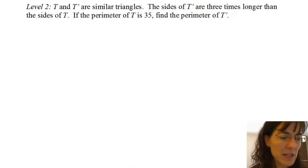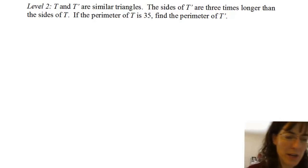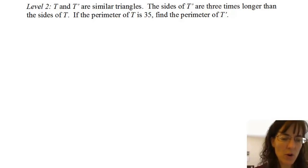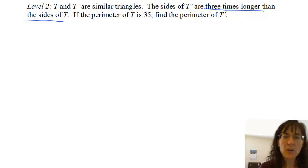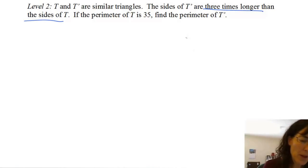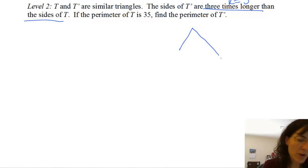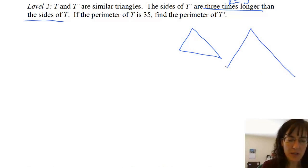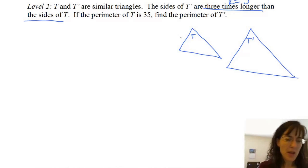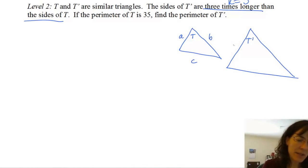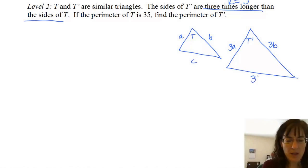Level 2. T and t prime are similar triangles. The sides of t prime are three times longer than the sides of t, so I know my multiple already — that tells me my k is 3. If I draw these triangles, I have one that's t and one that's t prime. So t has sides a, b, and c, and t prime would have to be 3a, 3b, and 3c.